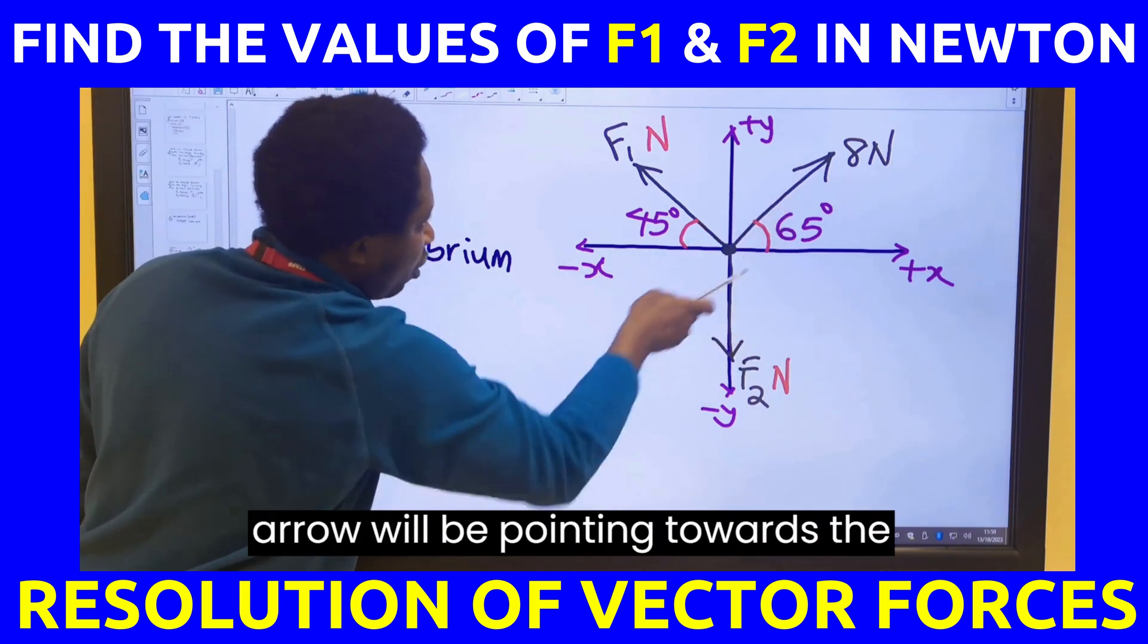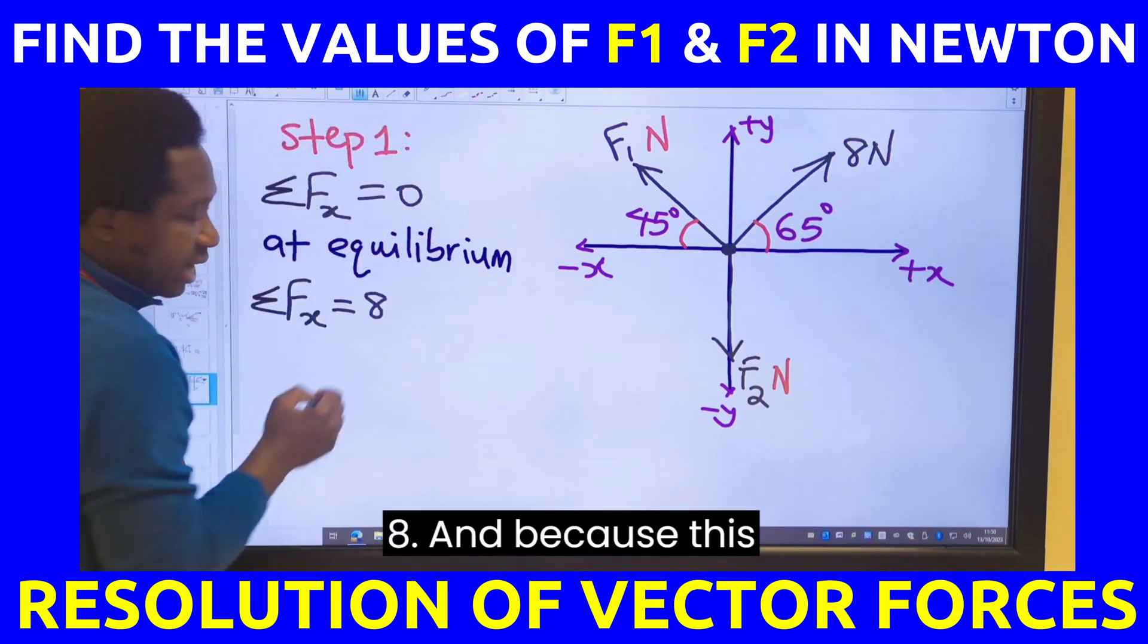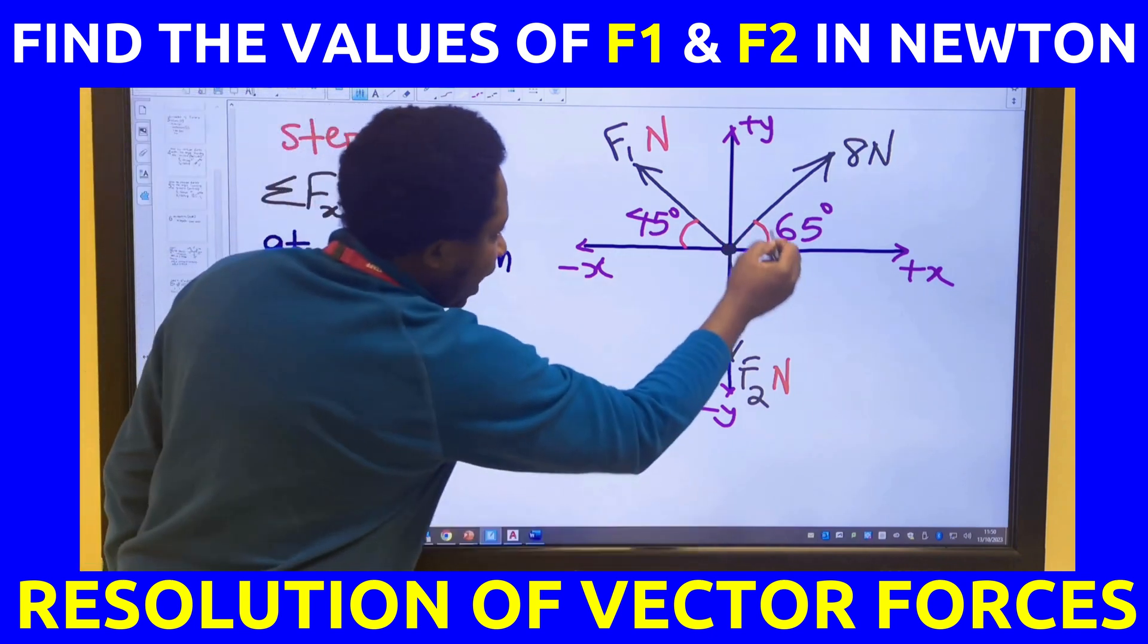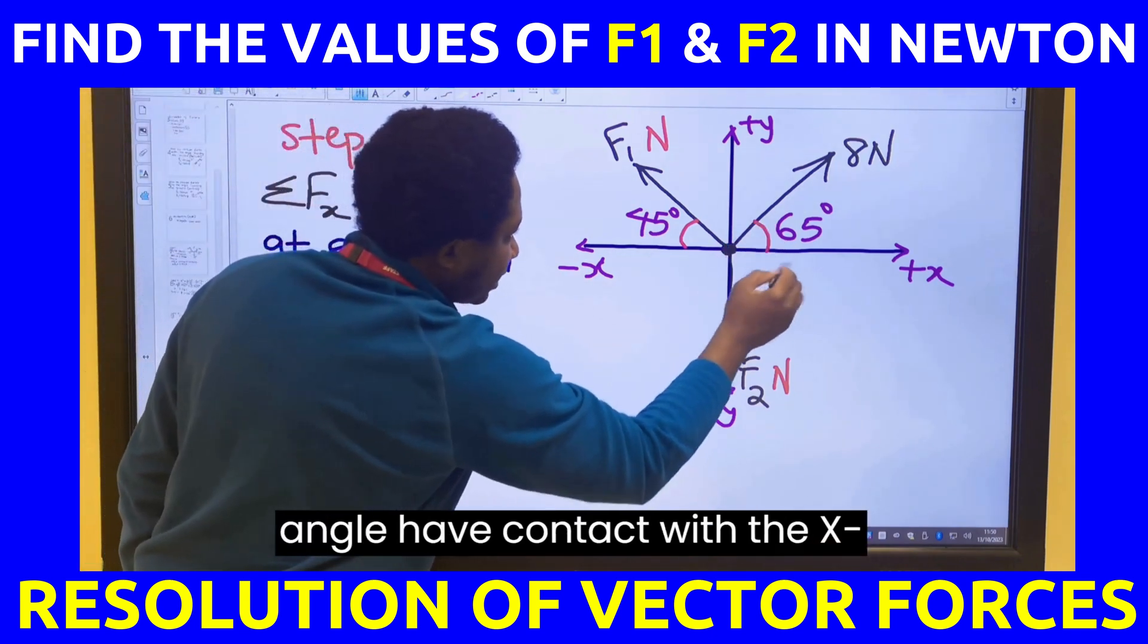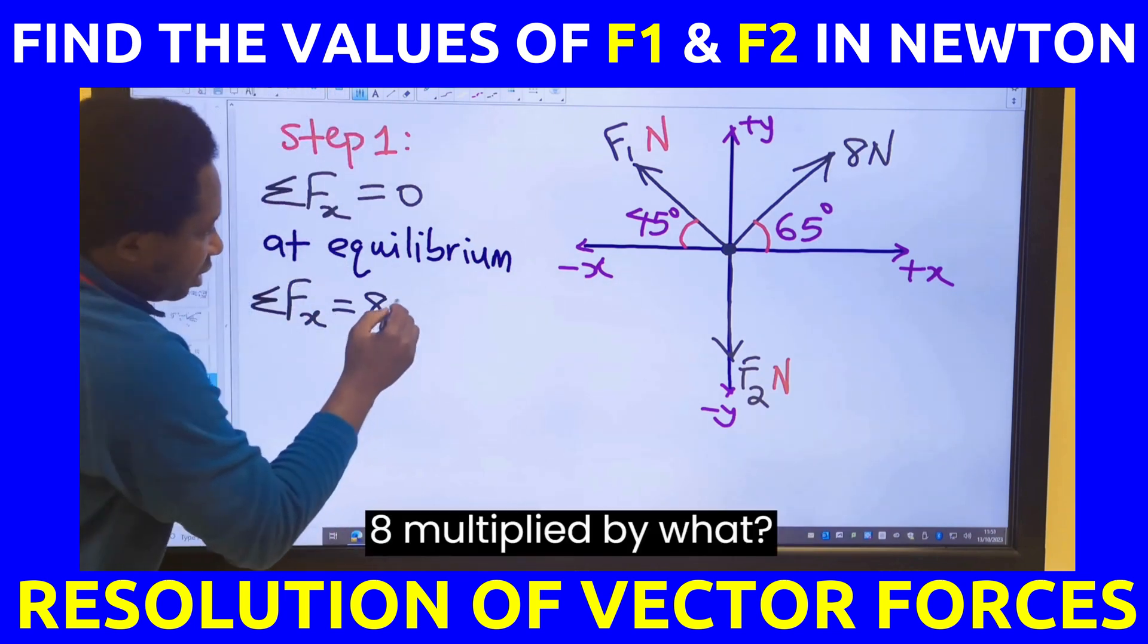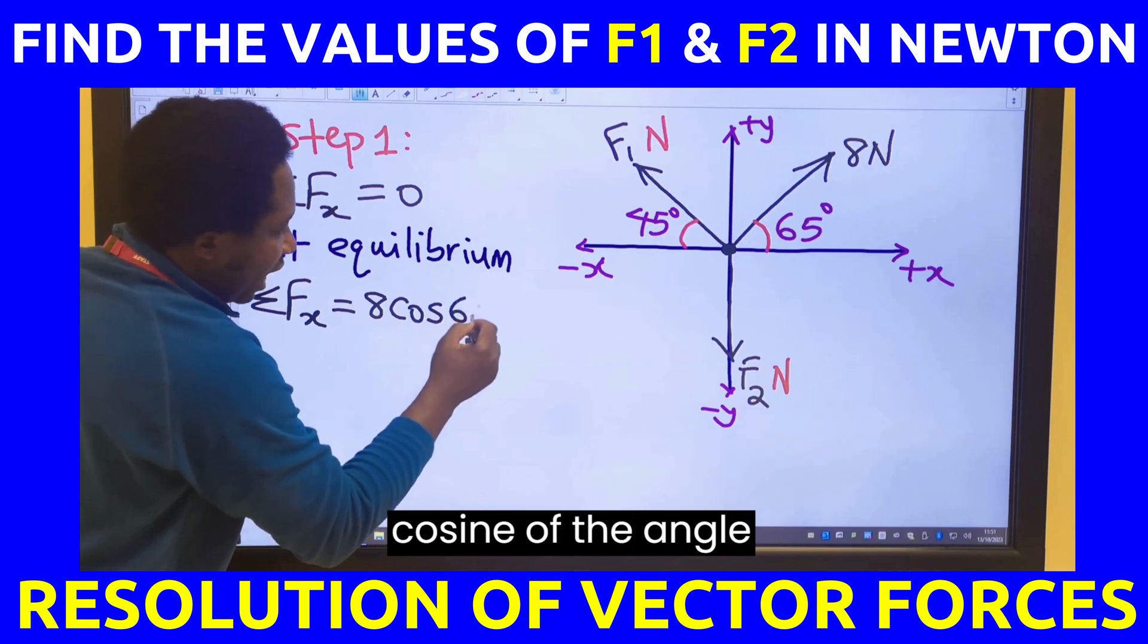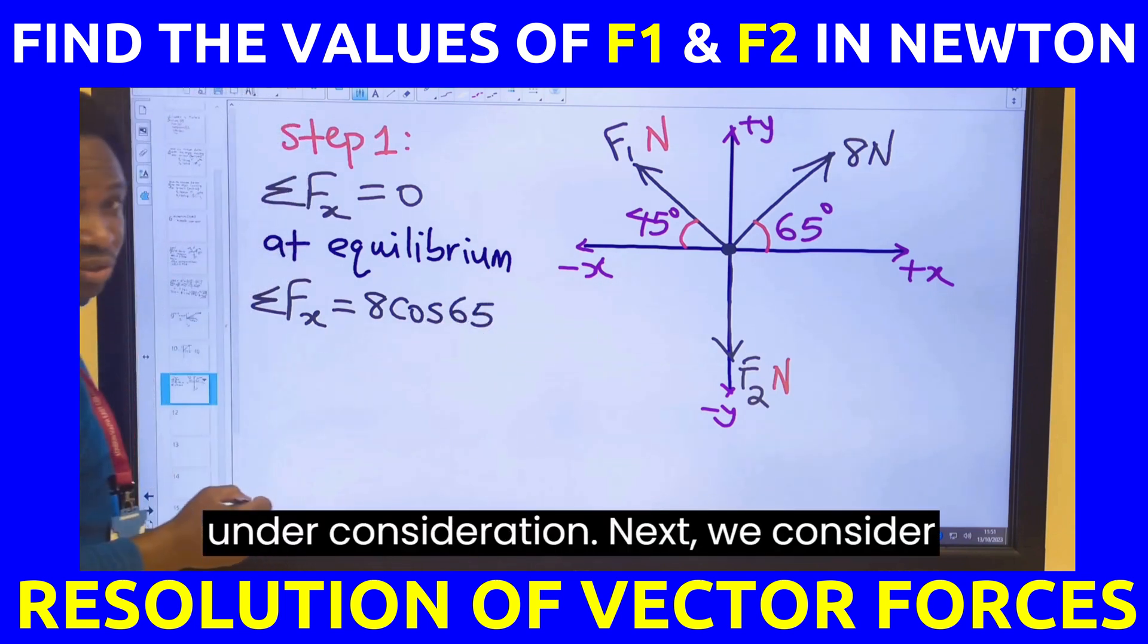This arrow will be pointing towards the positive x-axis which makes it 8. And because this angle has contact with the x-axis, it's going to be 8 multiplied by cosine of the angle under consideration.